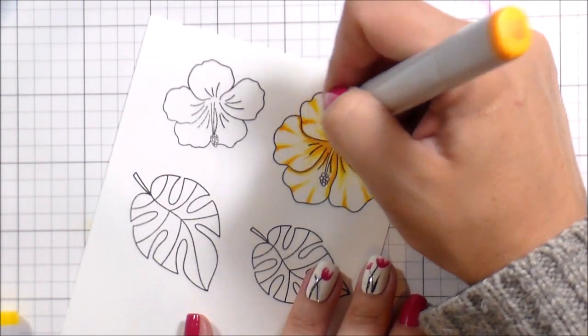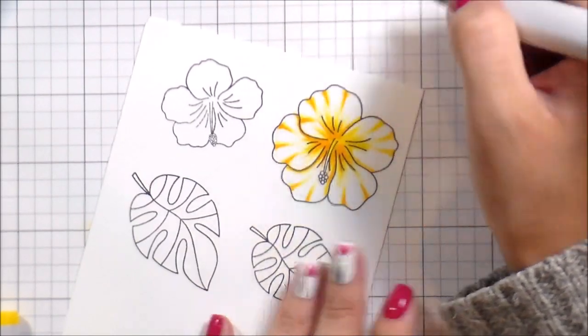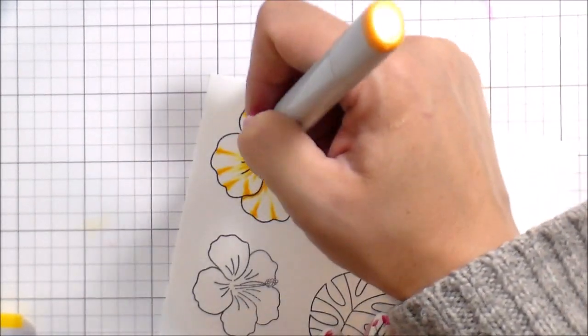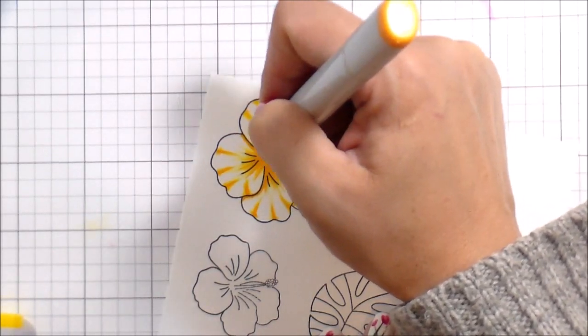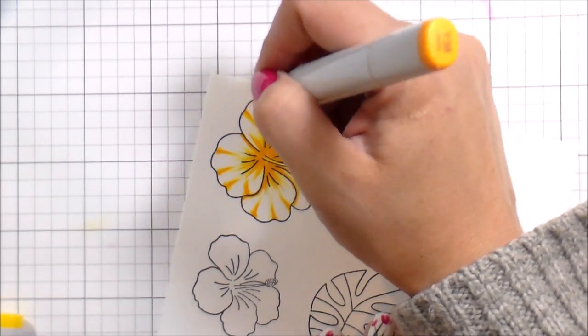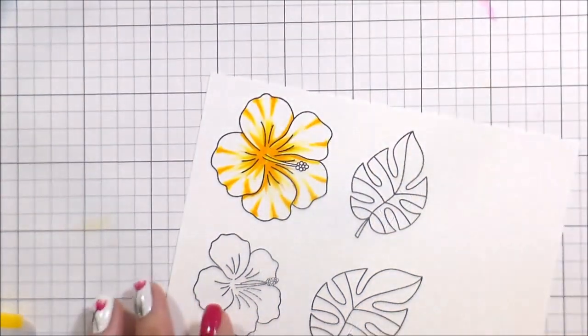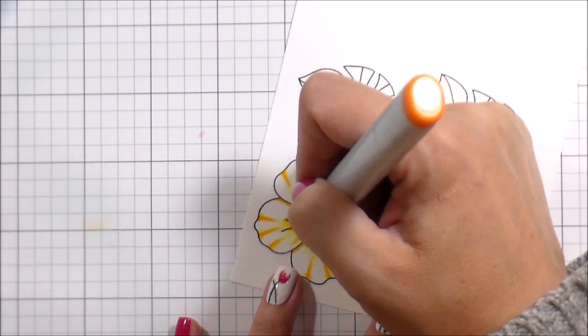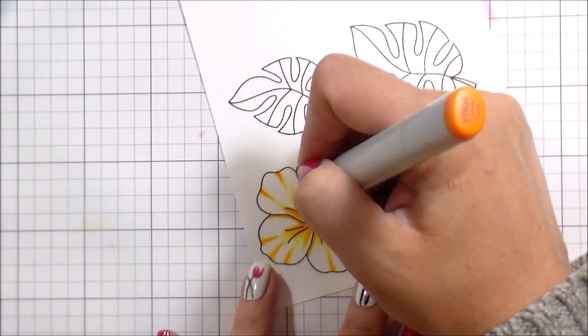I color lightest to darkest. There is still a ton of white area in my coloring. That is my saving grace so that I don't get too heavy handed because it's a problem that I have. This is the only way that I know to do it and still get results that I love.